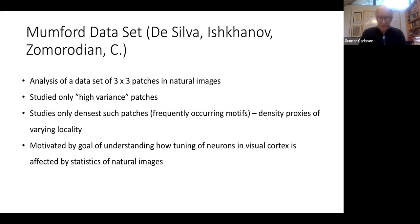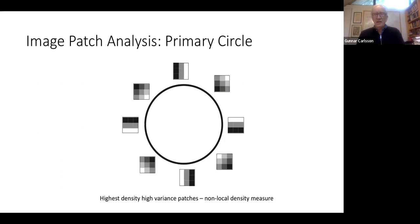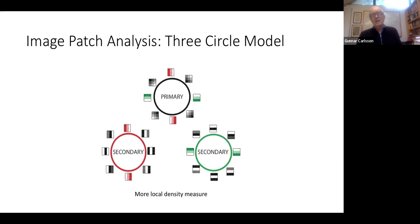This was motivated by understanding how the tuning of neurons in the visual cortex is affected by the statistics of natural images. What we found was the primary circle: using a non-local density measure, the most dense structure consists simply of patches that are a gradient from black to white — a linear gradient, discretizations of such — and then rotated around. In other words, that gradient can move at different angles, and that angle is the circle parameter.